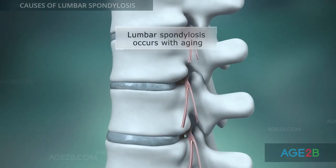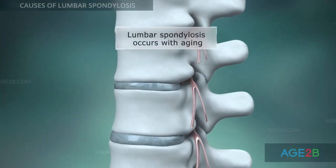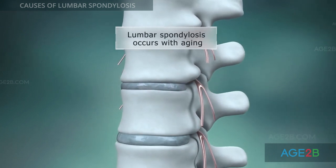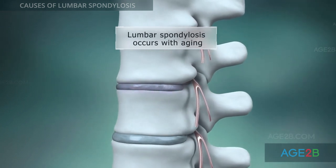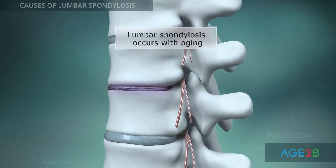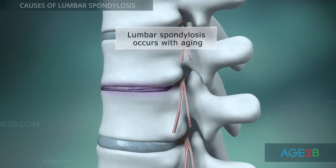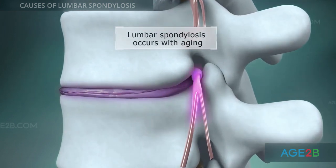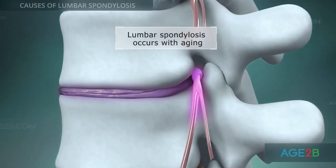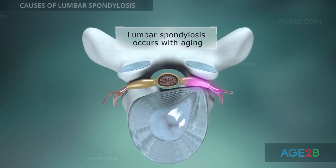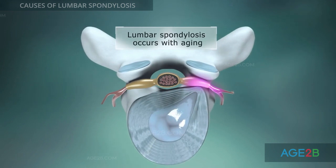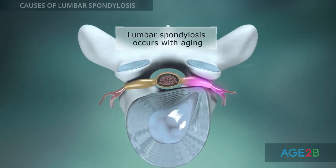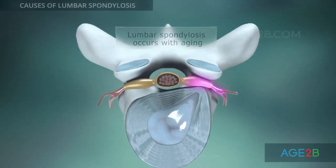In most cases, lumbar spondylosis occurs as a result of degenerative changes in the spine as we age. Intervertebral discs become dry and thin around the time you turn 40. Disc degeneration can cause herniation, one of the signs of lumbar spondylosis.